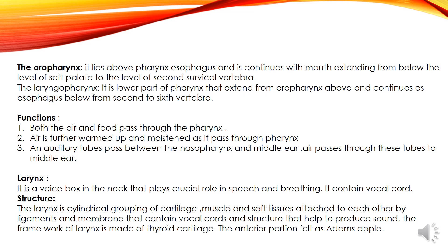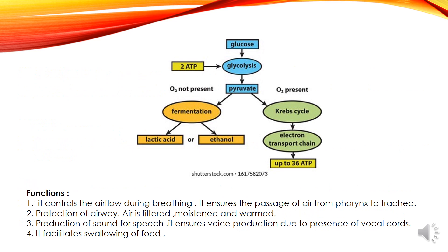The larynx is the voice box in the neck that plays a crucial role in speech and breathing. It contains the vocal cords. The larynx is a cylindrical grouping of cartilage, muscle and soft tissues attached to each other by ligaments and membranes that contain the vocal cord structure, which helps to produce sound. The framework of the larynx is made up of thyroid cartilage. The anterior portion can be felt as well. Here you can see the structure.